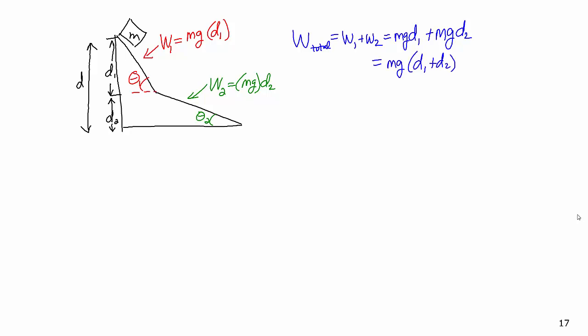Factoring out the mg, we have mg times the quantity d1 plus d2, which can be written as mg times the vertical distance d. So even though the ramp changed angle in the middle, the work done by gravity as the object slides down this more complicated ramp is still just mg times the vertical distance d.